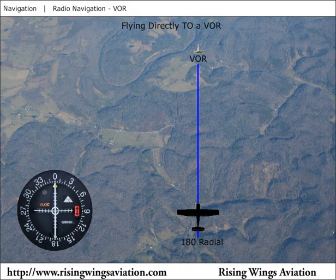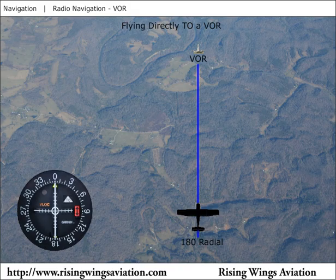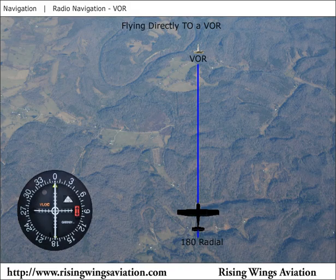For example, if you were directly south of a VOR on its 180 degree radial, then centering the needle with a TO indication would result in 360 being shown, since the VOR is directly north of the airplane. Turning the airplane to a 360 heading will get us heading towards the station.